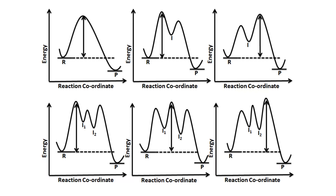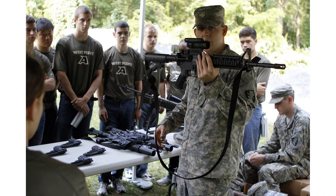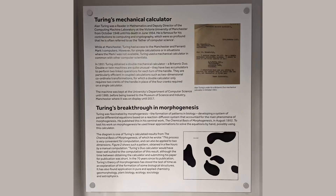The rate of a reaction can be affected by several factors, including temperature and concentration. Increasing the temperature of a reaction usually increases the rate, because higher temperatures provide more energy to the reactant molecules, making them more likely to collide and react. Increasing the concentration of the reactants also increases the rate, because higher concentrations mean there are more reactant molecules in a given volume, making collisions more likely.